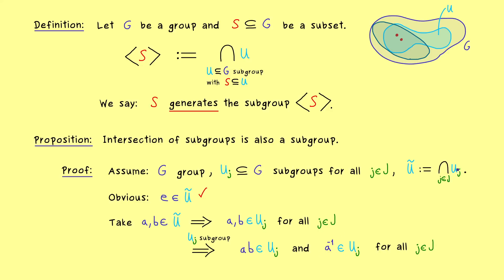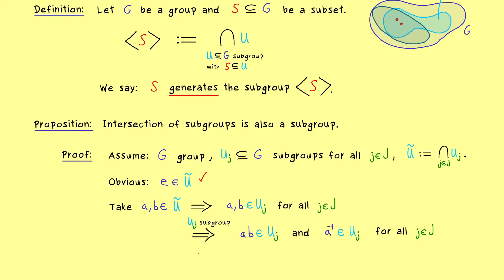Hence by the definition of the intersection, AB lies in U tilde and A inverse as well. And that's all we did. This shows us that U tilde is a subgroup. So this is a common thing to show a subgroup and you see it works in general for the intersection. And this shows us that we have indeed a subgroup in the definition above.